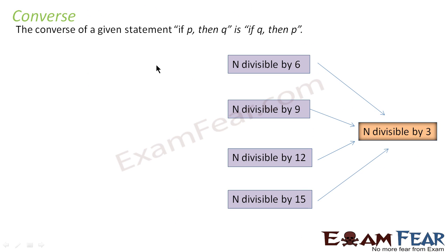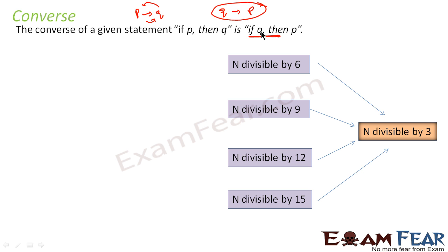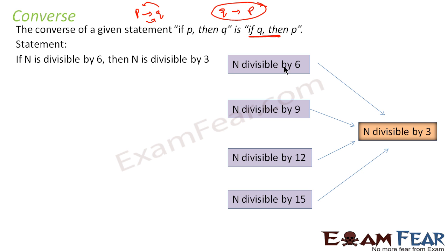Now let's discuss converse. As we have seen, if we have a statement in the form p to q, for converse we just topple it — so it becomes q to p: 'if q, then p.' For example, consider the statement: 'if n is divisible by 6, then n is divisible by 3.' This is a true statement.